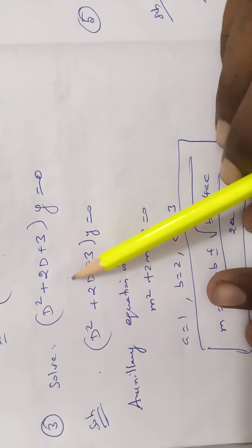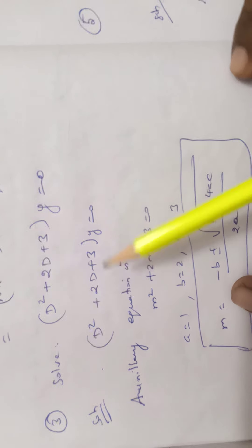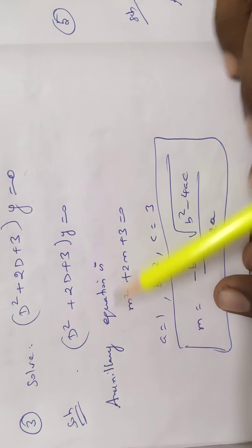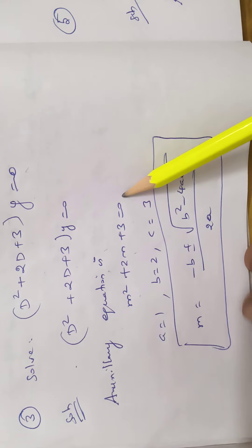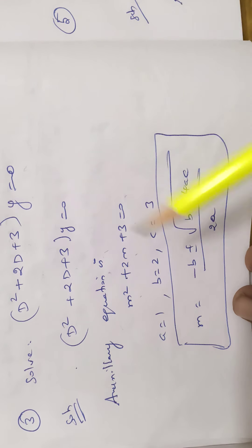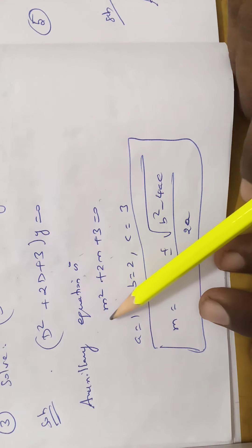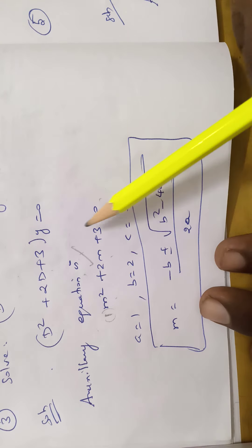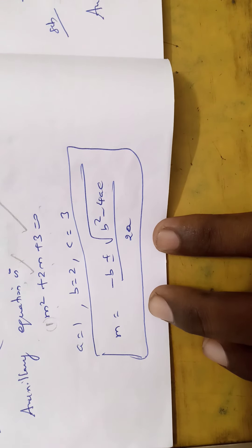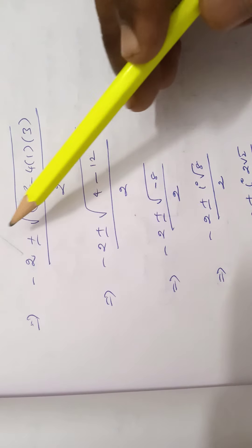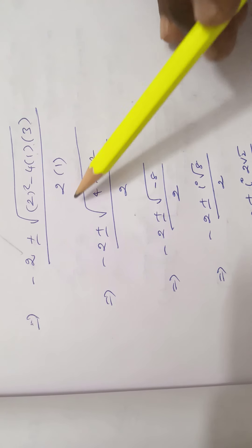Problem 3. Solve (D² + 2D + 3)y = 0. The auxiliary equation is m² + 2m + 3 = 0. Applying the quadratic formula with a = 1, b = 2, c = 3: m = (-b ± √(b² - 4ac)) / (2a).